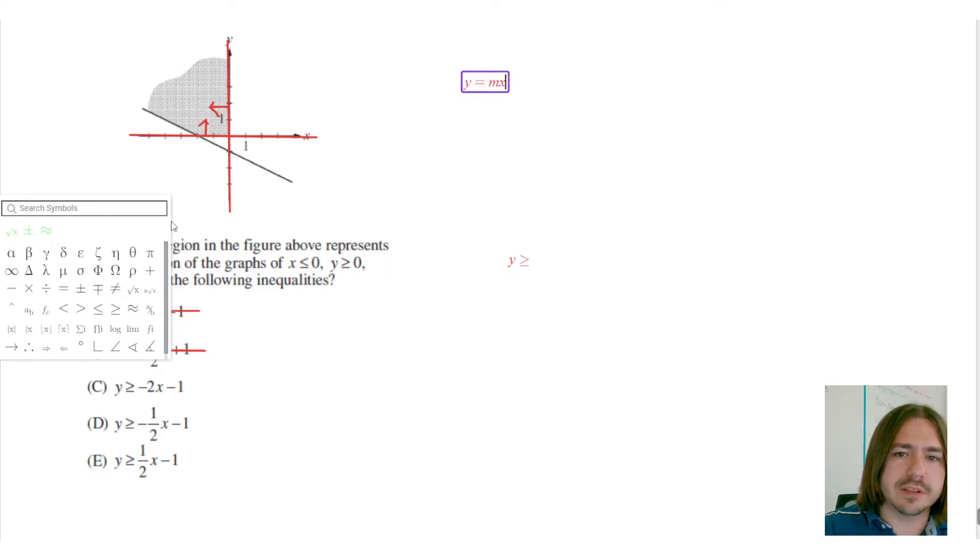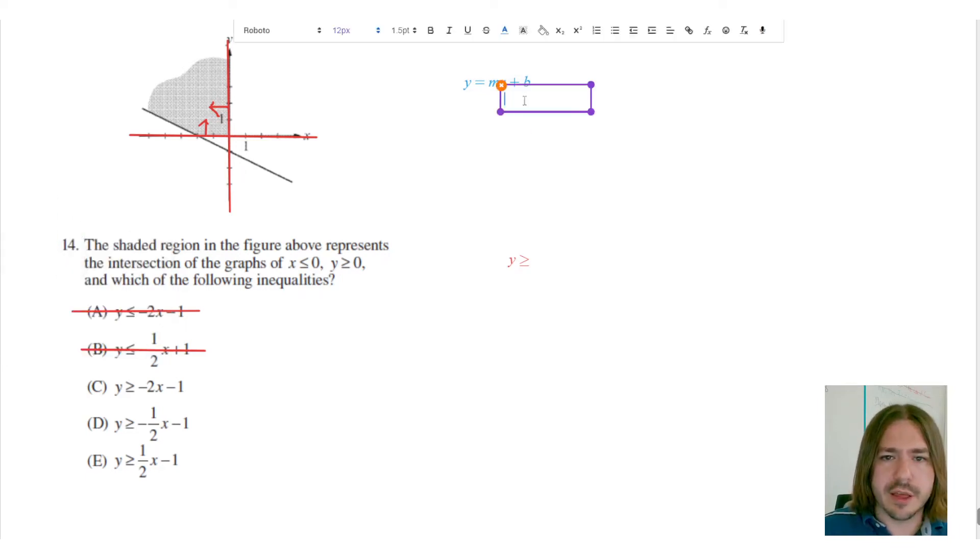So in y equals mx plus b, m is the slope or the rate of change. Let me make a note of that here - m is the slope, or sometimes it's called the rate of change.